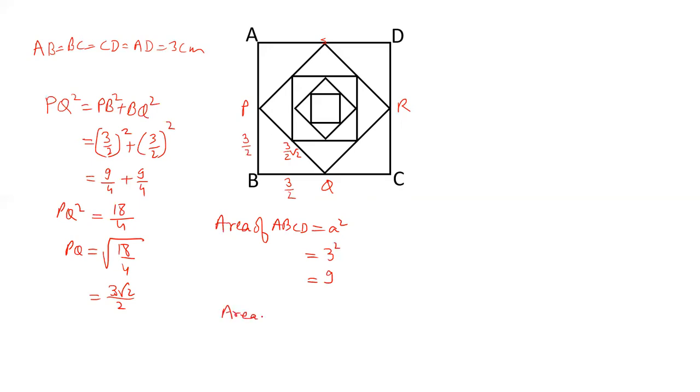Now let us calculate area of PQRS. That is also side square, and the side is PQ square. It is PQ square and we have the value of PQ square, that is 18 by 4. 18 by 4 is 9 by 2.